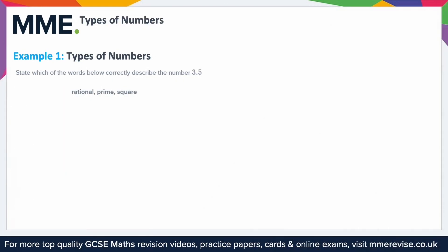Example 1, types of numbers. State which of the words below correctly describe the number 3.5. So you've got three options. Is it a rational number, a prime number, and a square number?